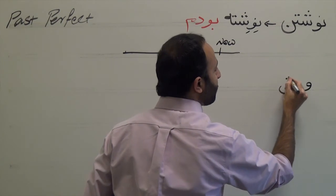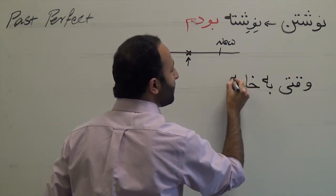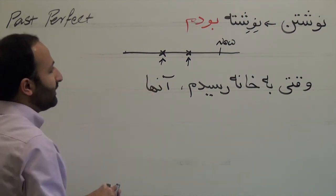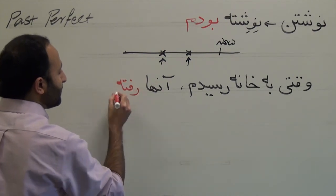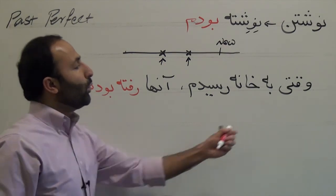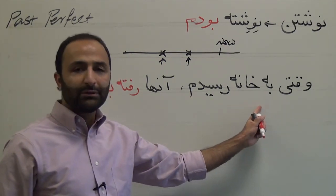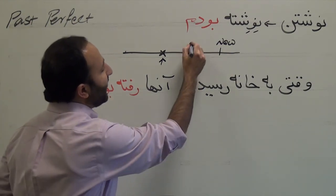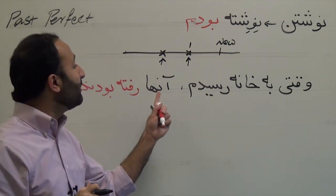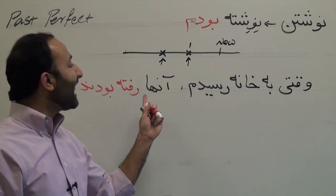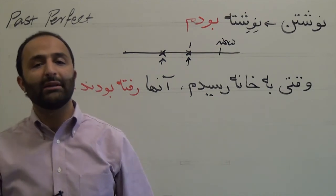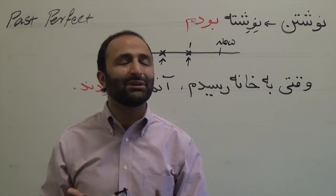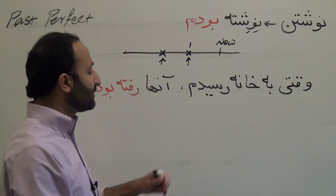For example: when I arrived at home, they had gone. So I arrived at home in the past, but they had already gone before I arrived — their action was before my action. I arrived, but they had gone. The usage of past perfect in Farsi and in English is pretty much the same, with some slight differences.